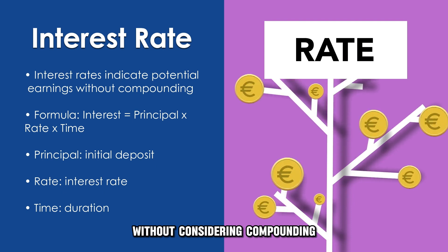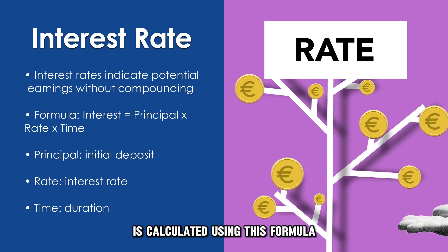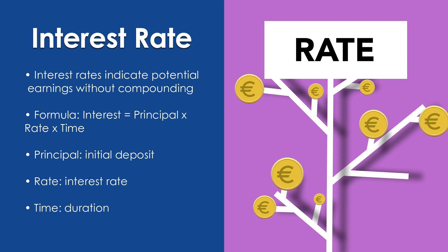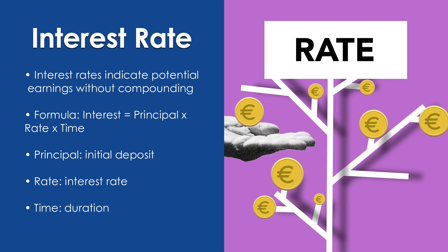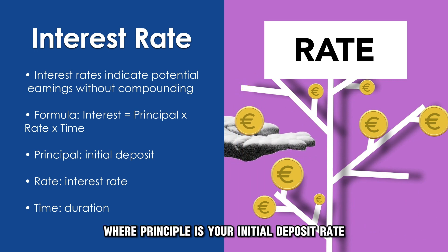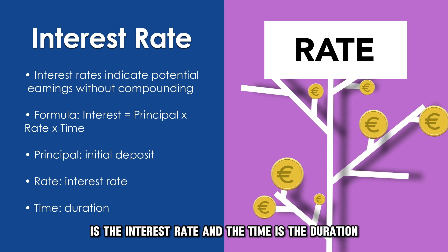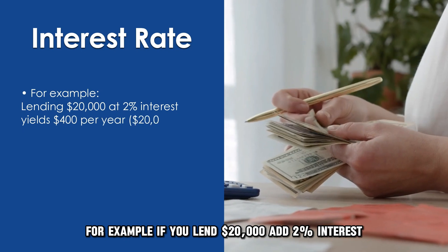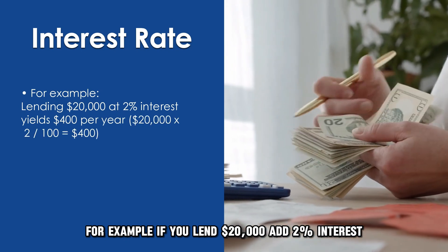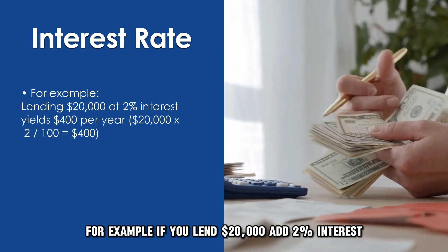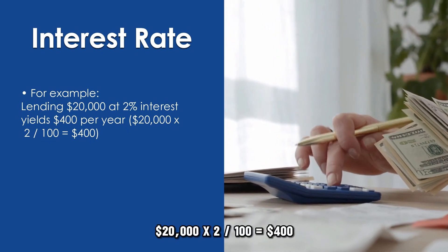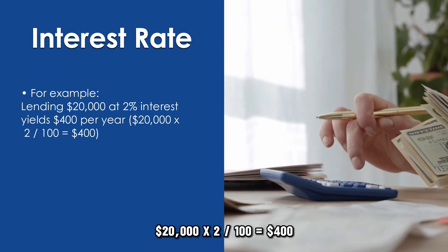Interest rates show your potential earnings without considering compounding. It is calculated using this formula: Interest = Principal × Rate × Time, where principal is your initial deposit, rate is the interest rate, and time is the duration. For example, if you lend $20,000 at 2% interest, you earn $400 annually: $20,000 × (2 ÷ 100) = $400.